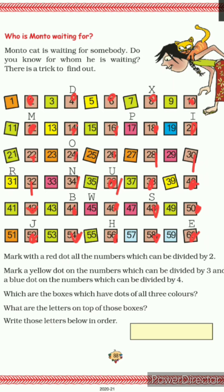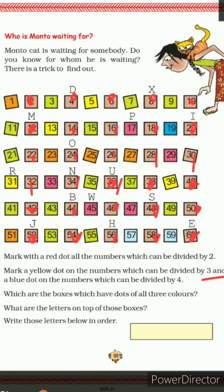Next, mark a yellow dot on numbers which can be divided by 3. You can use the 3-times table to find them: 3, 6, 9, 12, 15, 18, 21, 24, 27, 30, 33, 36, 39, 42, 45, 48, 51, 54, 57, and 60. Mark all these with a yellow dot.